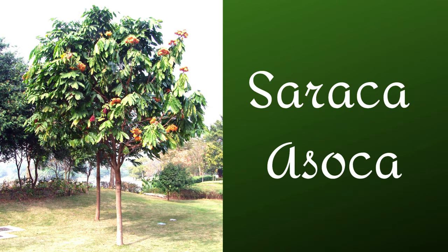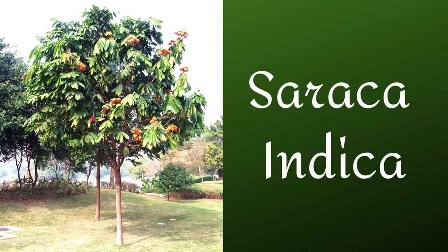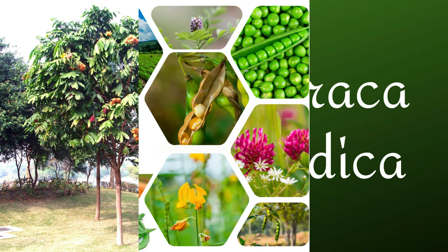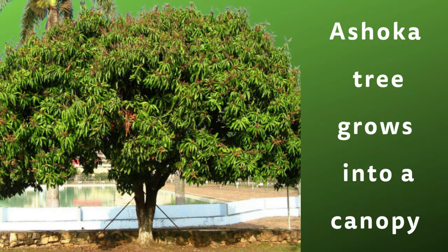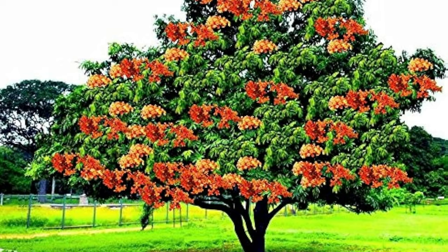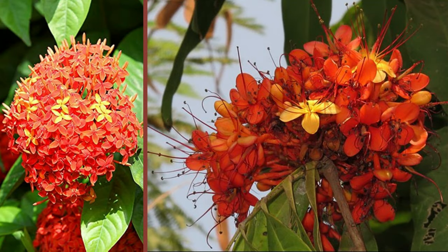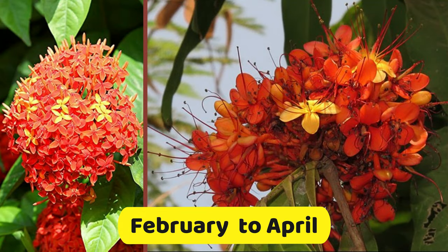The scientific name of the Ashoka tree is Saraca asoca, sometimes known as Saraca indica. The Ashoka tree belongs to the sub-family Caesalpinioideae of the family Fabaceae. The Ashoka tree grows into a canopy and has plenty of flowers. Its flowering season is around February to April.